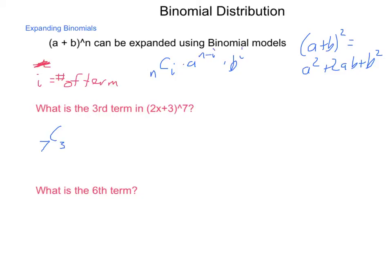Using our formula, this is going to be 7, our exponent, choose our third term. A small correction - i is the number of term minus 1. So instead of choose 3, we are going to choose 2. The reason is that for our first term, we are going to choose 0.